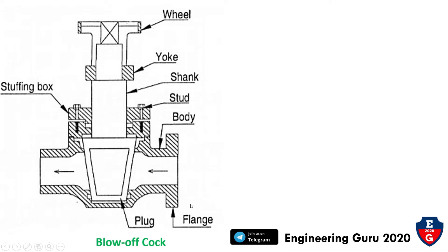Here is the blow-off cock schematic diagram. It consists of: wheel, yoke, shank, stud, body, flange, plug and stuffing box.